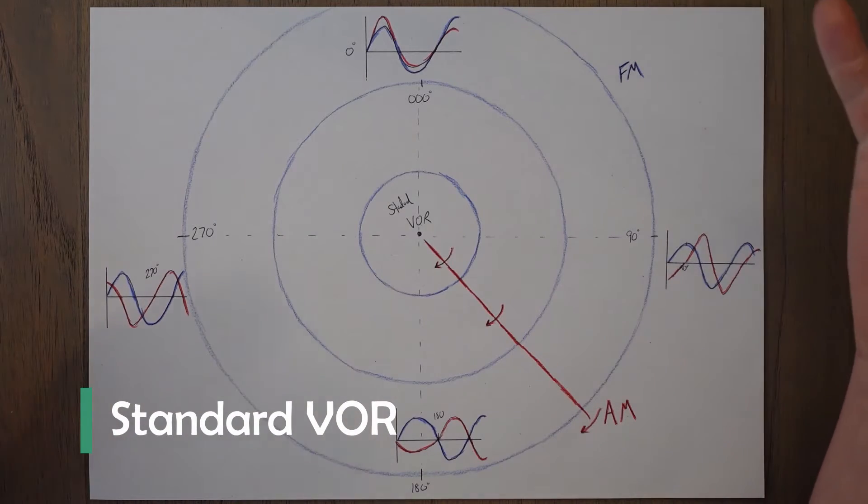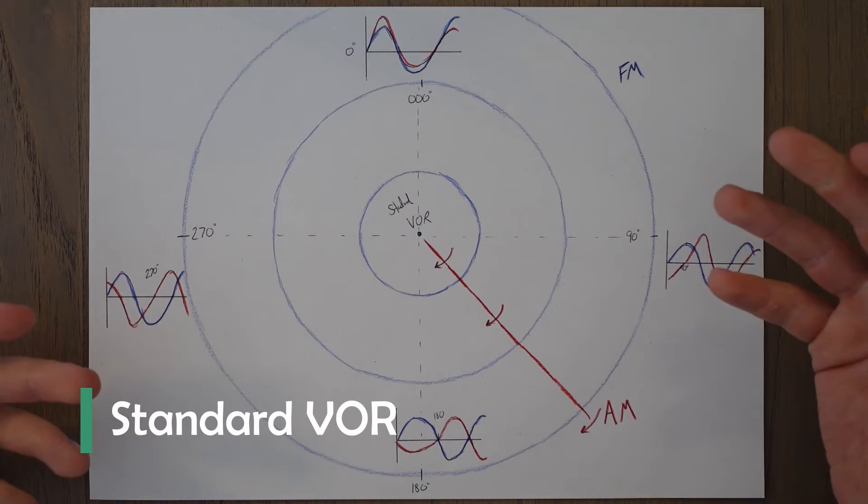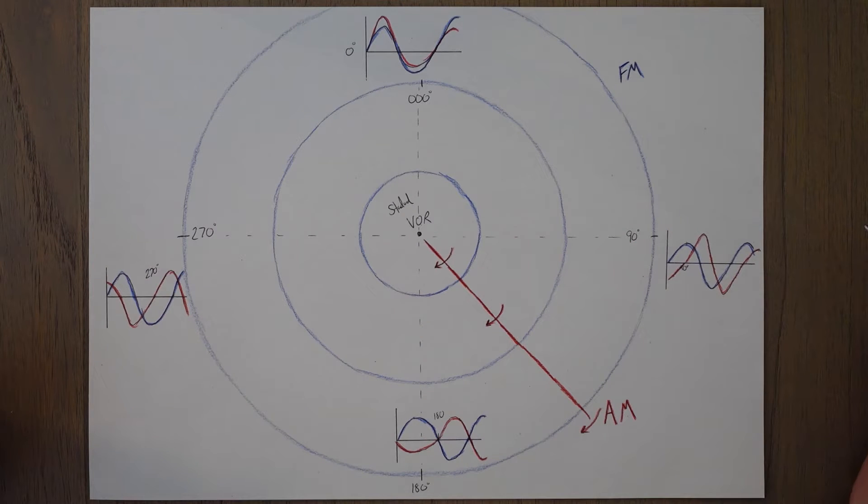There are two types of VOR out there in the world, called standard and Doppler, and we're first going to take a look at the standard type.